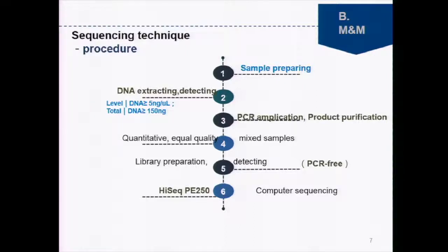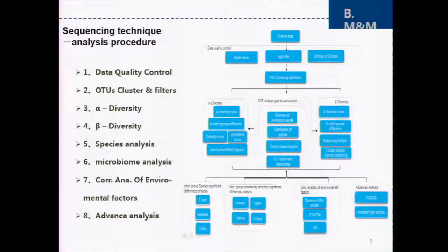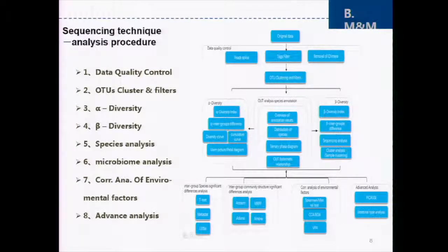The sequencing procedure includes six steps: sampling, sample preparing, DNA extracting, detecting, PCR amplification, product purification, and others. The analysis procedure includes data quality control, OTU clustering and filtering — where OTU means operational taxonomic unit — alpha diversity, beta diversity, species analysis, microbiome analysis, and others.